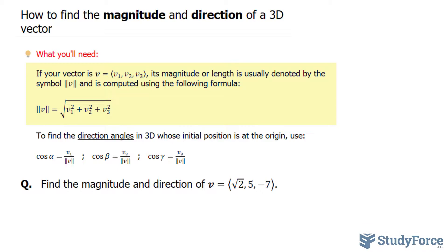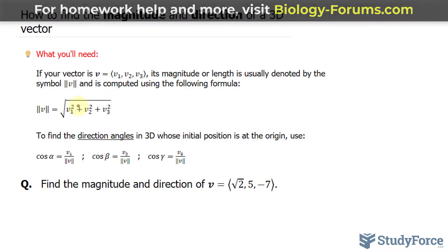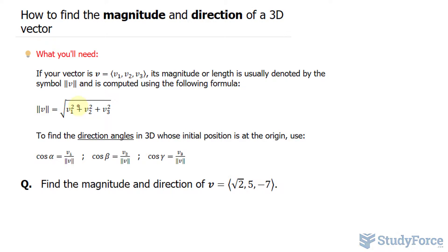its magnitude or length is usually denoted by the symbol ||V|| and it's computed using the following formula, where we take each of those components, we square them, add them, then square root. It's a variant of the Pythagorean theorem.